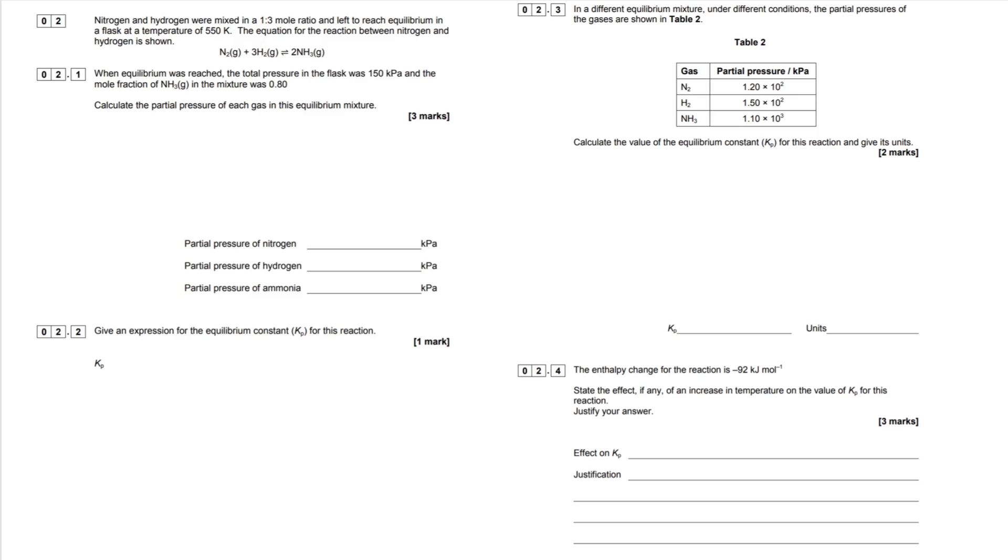Nitrogen and hydrogen were mixed in a 1 to 3 mole ratio and left to reach equilibrium in a flask at a temperature of 550 Kelvin. The equation for the reaction between nitrogen and hydrogen is shown below. So typical Haber process reaction occurring here. When equilibrium was reached, the total pressure in the flask was 150 kPa and the mole fraction of ammonia gas was 0.8.